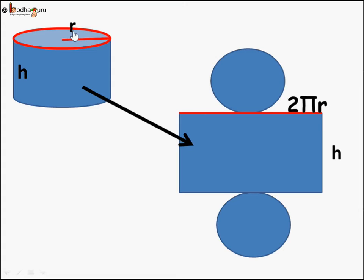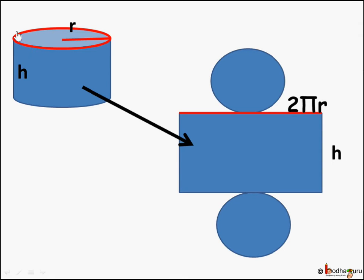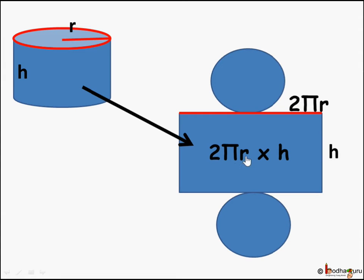We know the circumference of a circle of radius R is 2πR — this we learned in our last lessons. So now we know the rectangle's length is 2πR, which is the circumference of the circle, and the breadth is H, the height of the cylinder. So the area of this rectangle is length × breadth = 2πR × H = 2πRH.